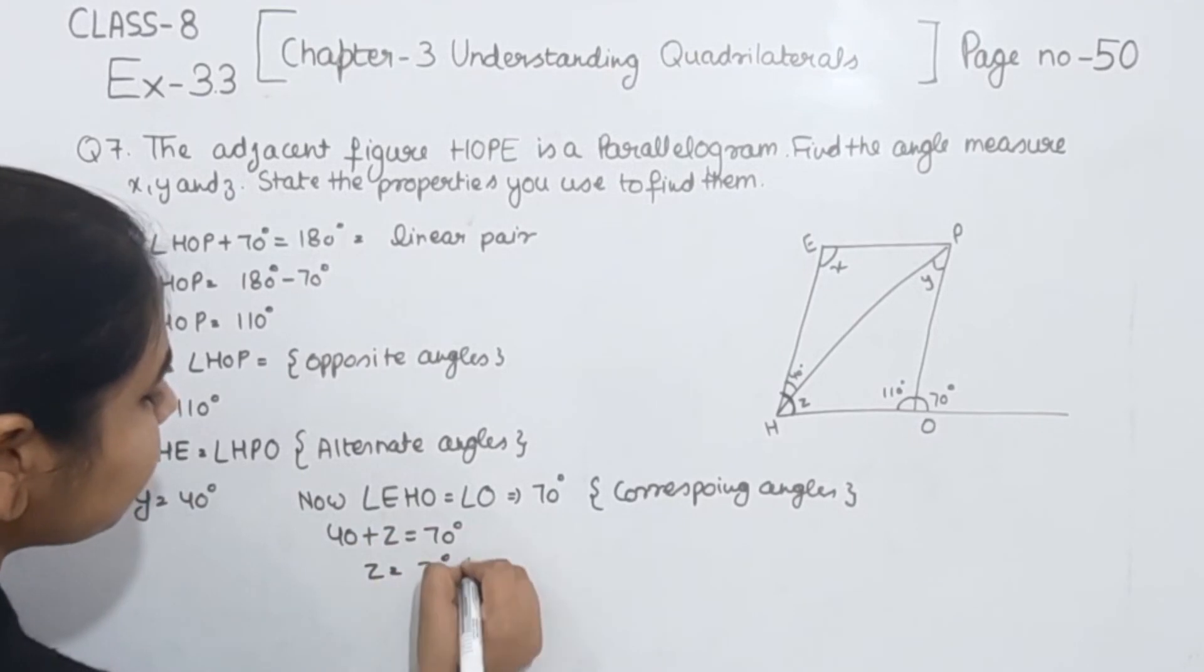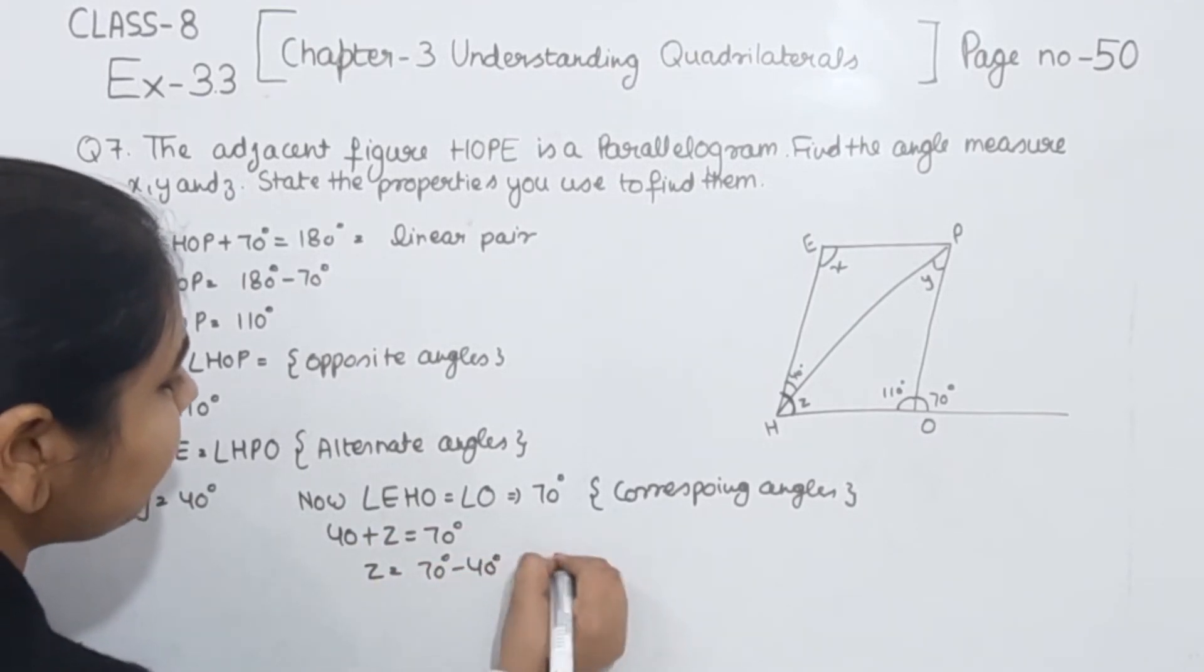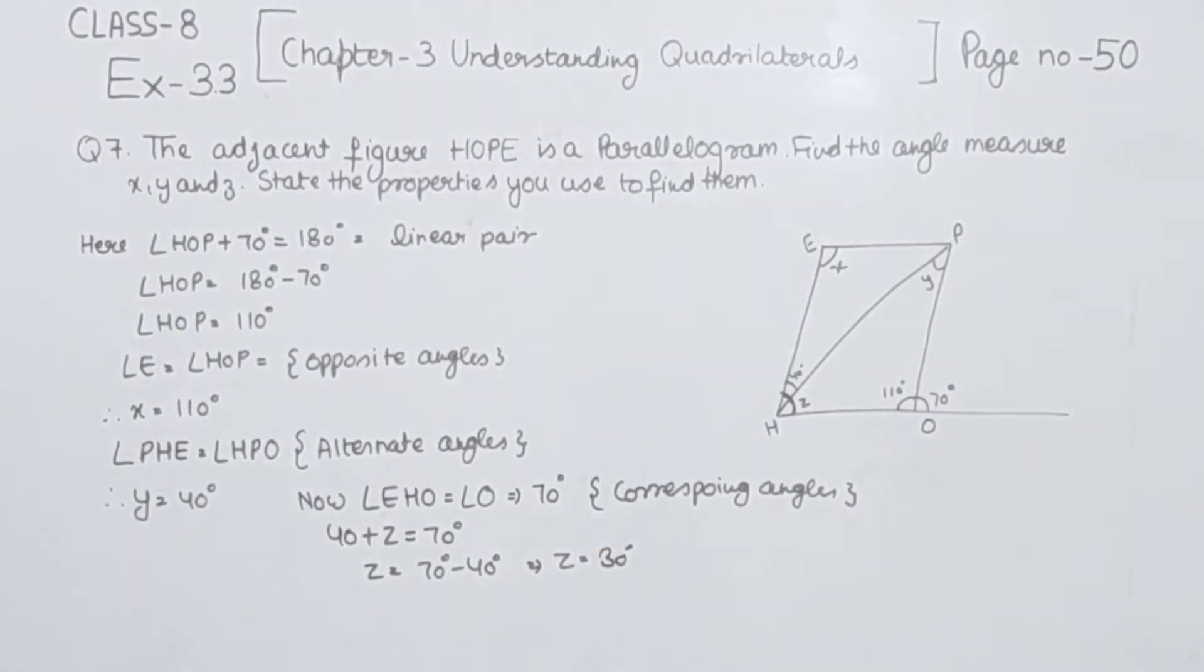Now Z is equal to 70 minus 40. So the value of Z we are having as 30 degrees.